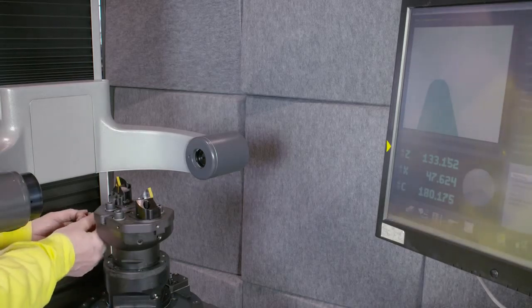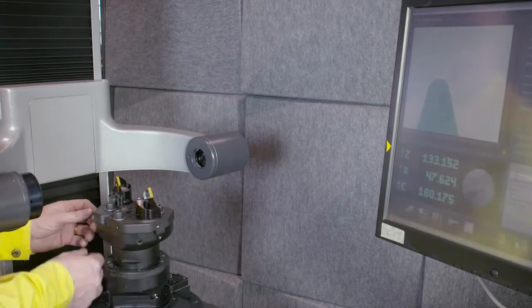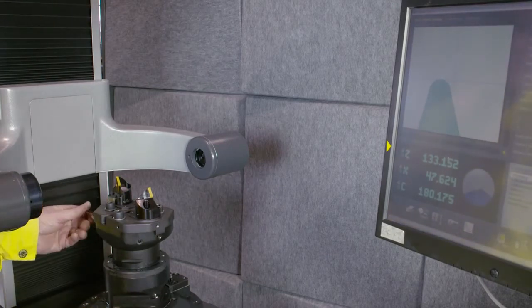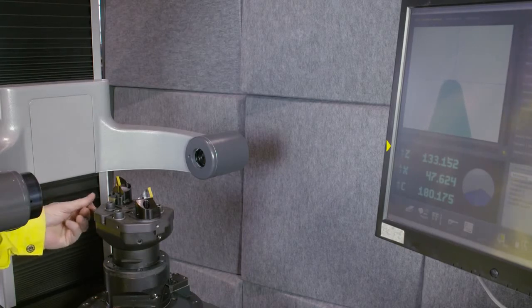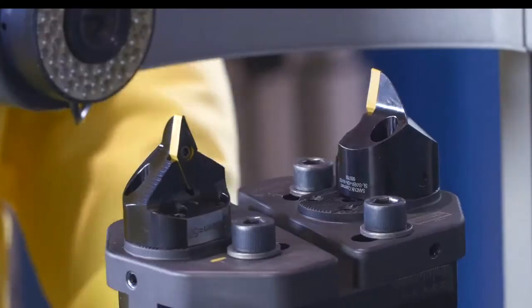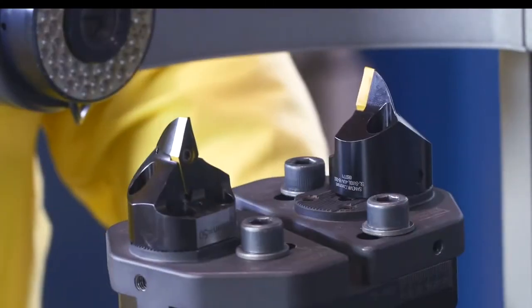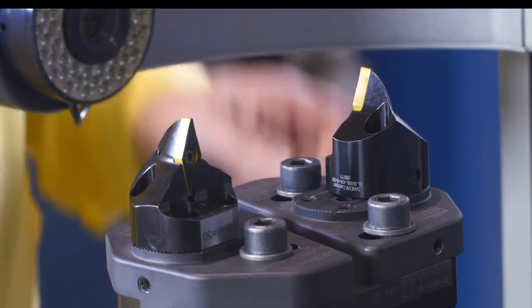We will set the tool radius as close as possible to the nominal value of 47.625 mm by turning the setting screws located on the side of the adapter. Turn the cutter 180 degrees and repeat the procedure for the other cutter head.